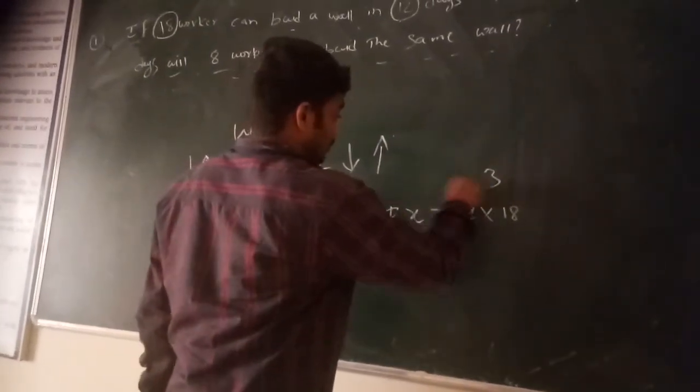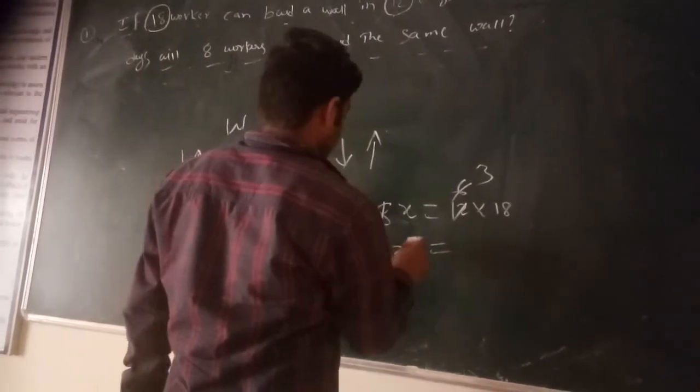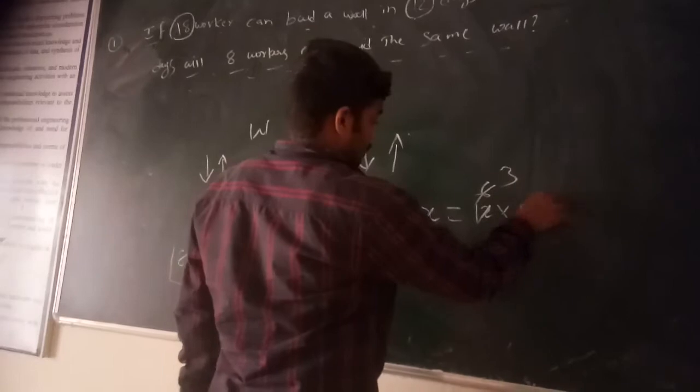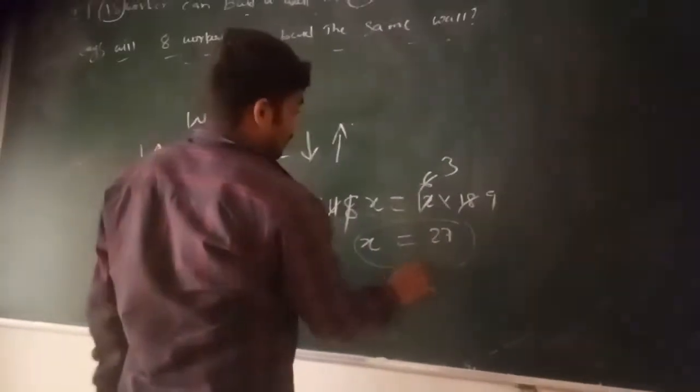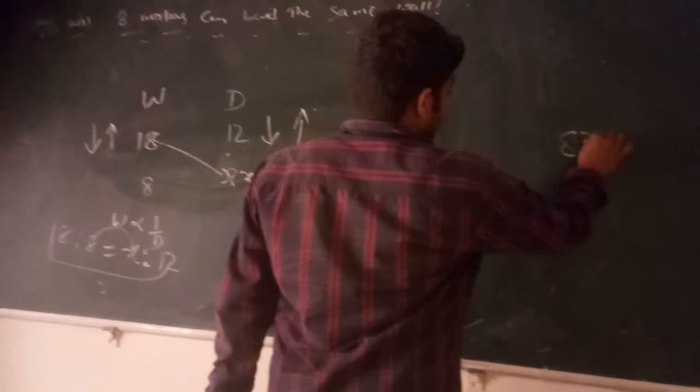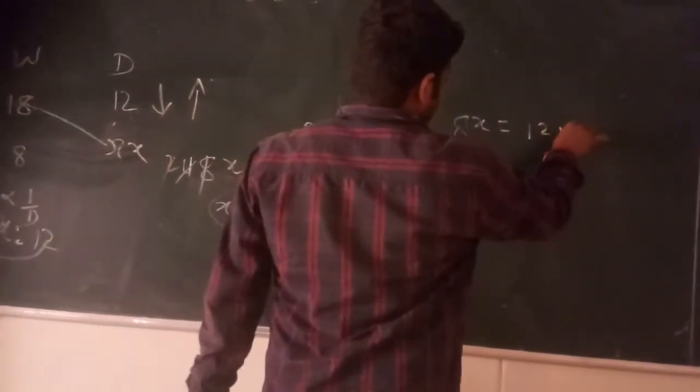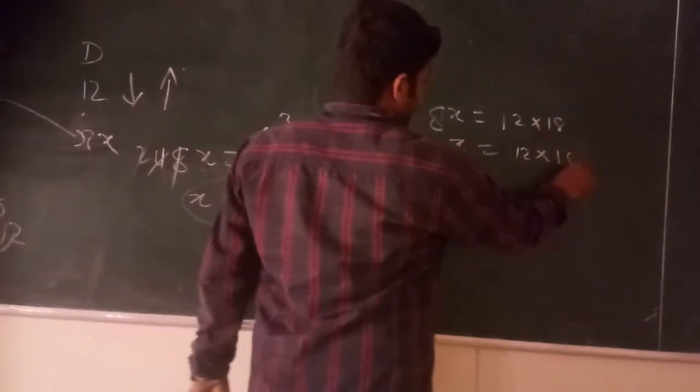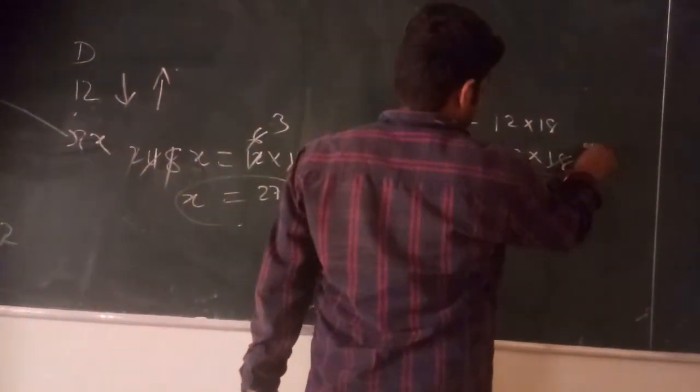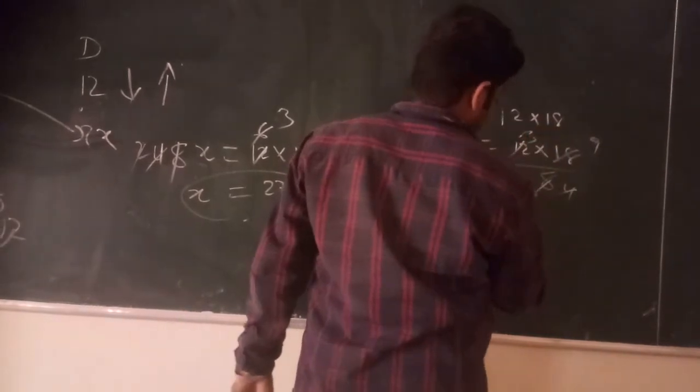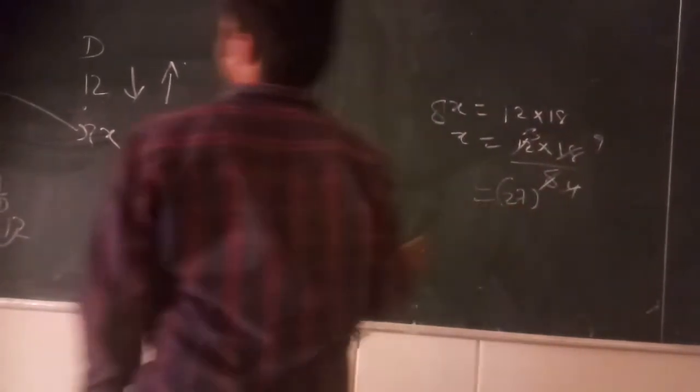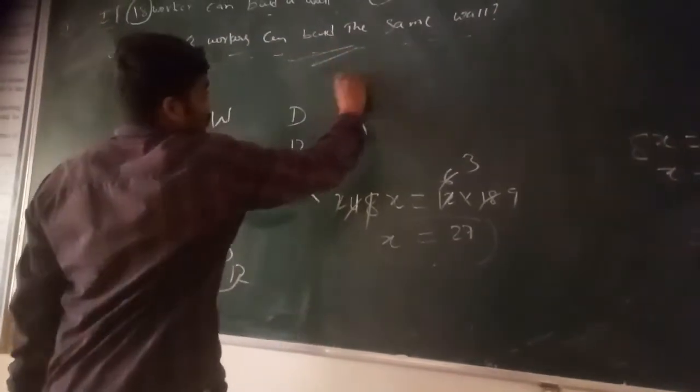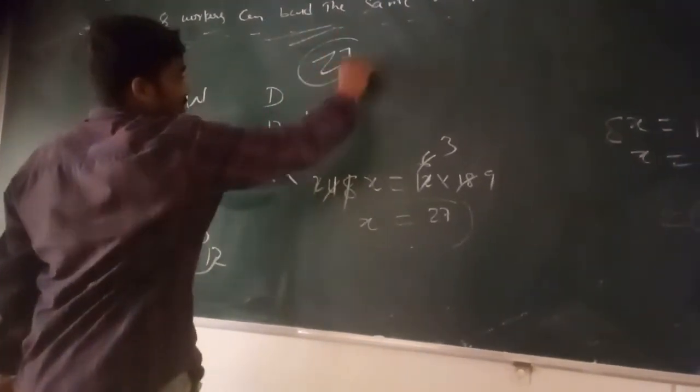Then 2, 8x is equal to 43. So 8, 4, 4, 3, 8, 3, 4, 8, 3, 4, 8, 3, 4. If 8 workers is trying to build the same wall, they are taking only 27 days to finish the work.